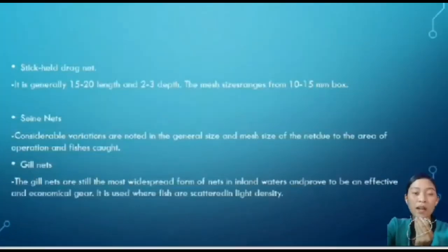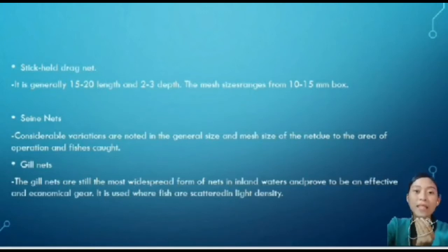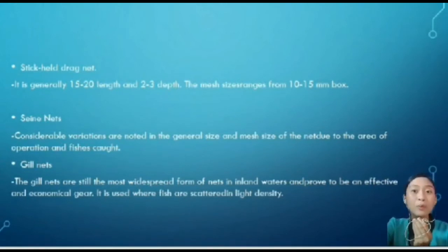Stick heel drag net: it is generally 15 to 20 meters in length and 2 to 3 meters in depth, with mesh sizes ranging from 10 to 15 mm. Sea net: considerable variations are noted in the general size and mesh size of the net due to the area of operation and the fishes caught. Gill nets are still the most widespread form of nets in inland waters like lakes and rivers, and are an effective and economical gear used where fish is scattered at low density.